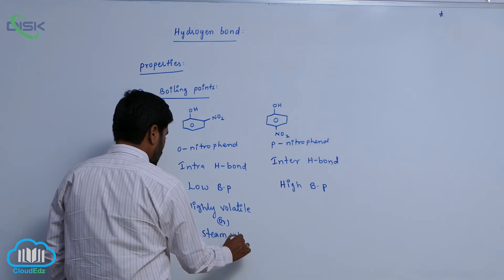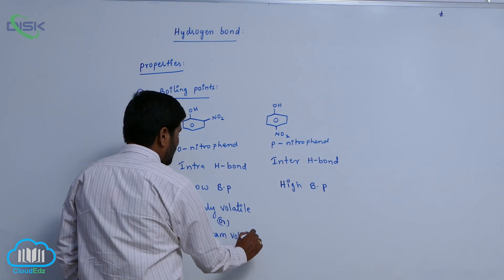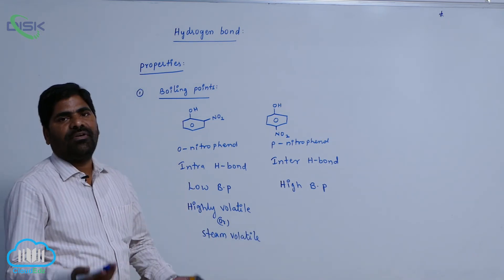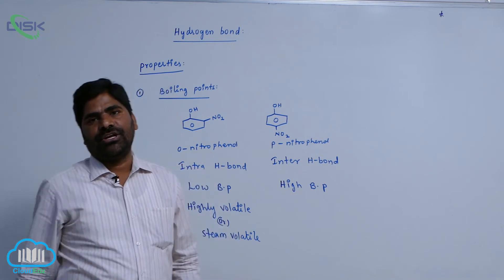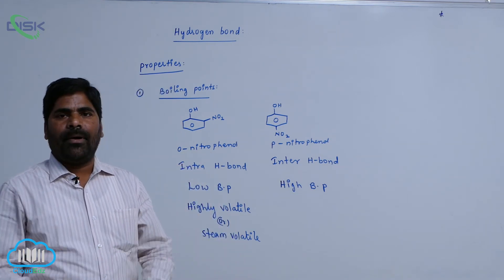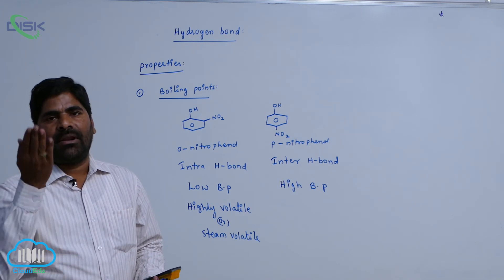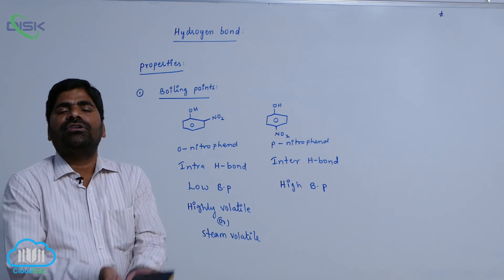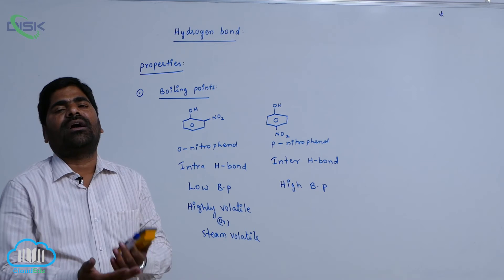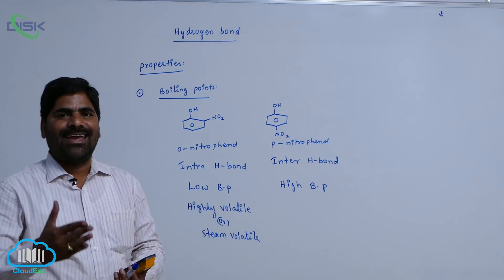What does steam volatile mean? It means evaporation of a compound easily by heating. If boiling point is less and we apply high temperature, the compound easily escapes from the container.